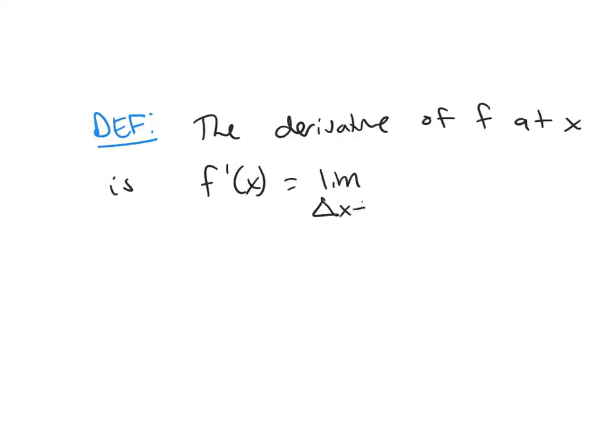So now we're going to define the derivative. So what's the definition? The derivative of f at x is f prime of x. The limit as delta x goes to 0, f of x plus delta x minus f of x over delta x.